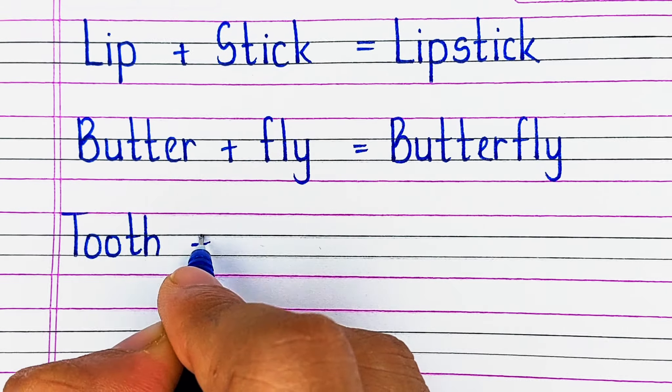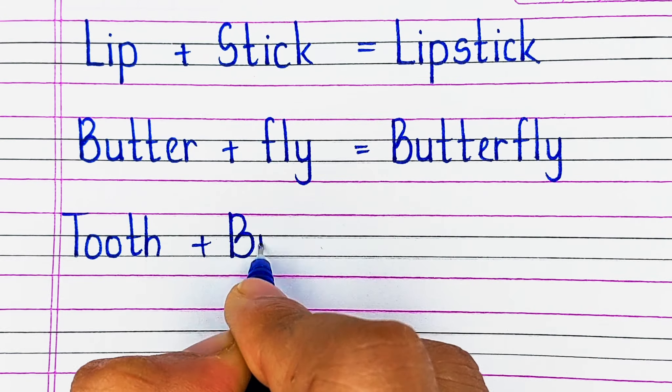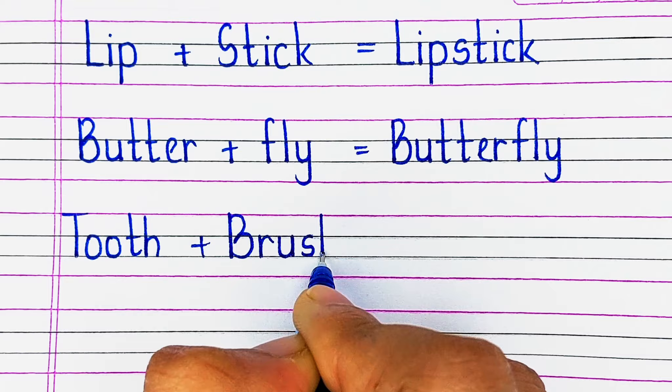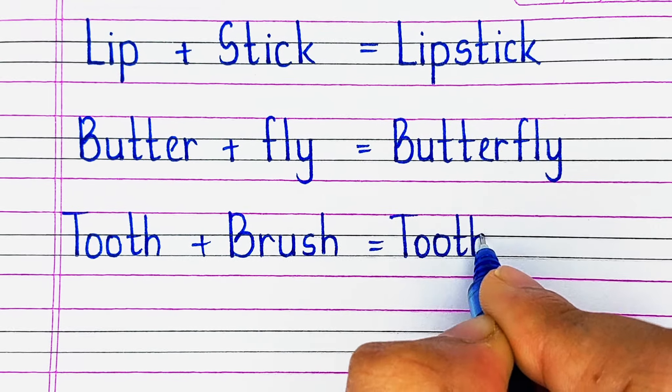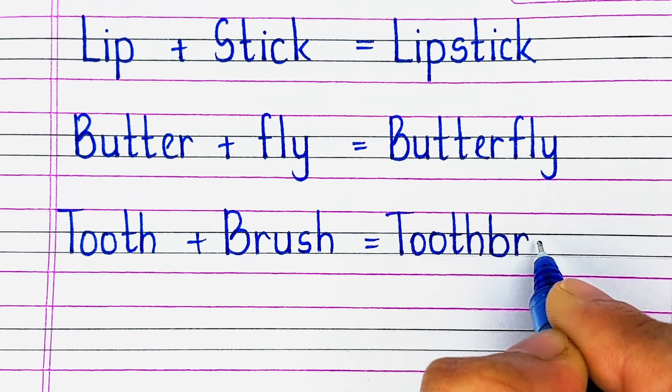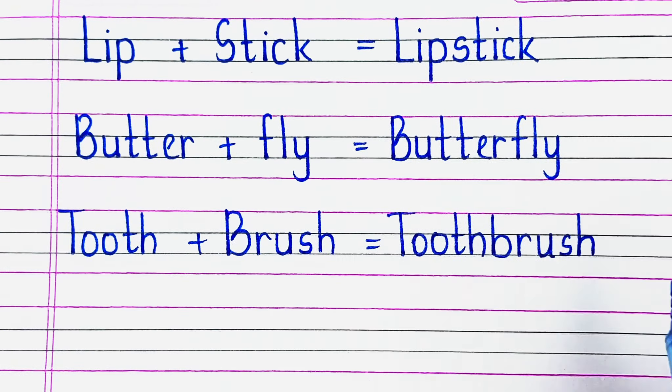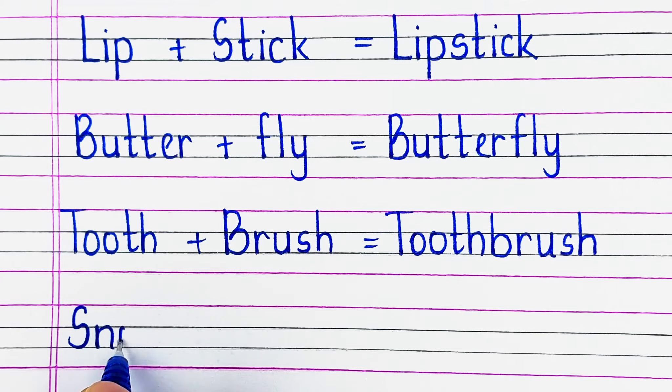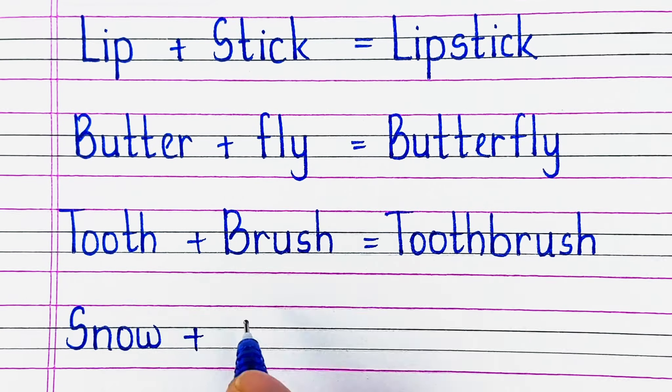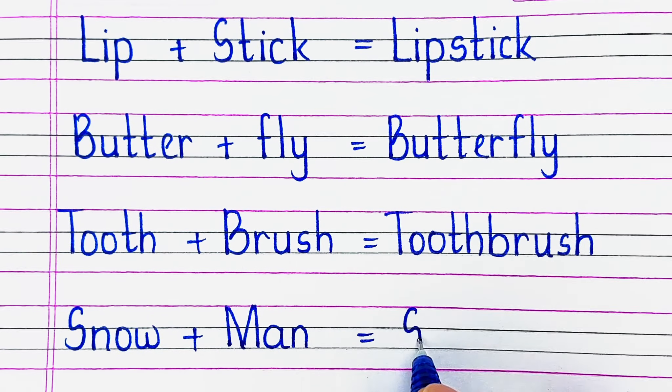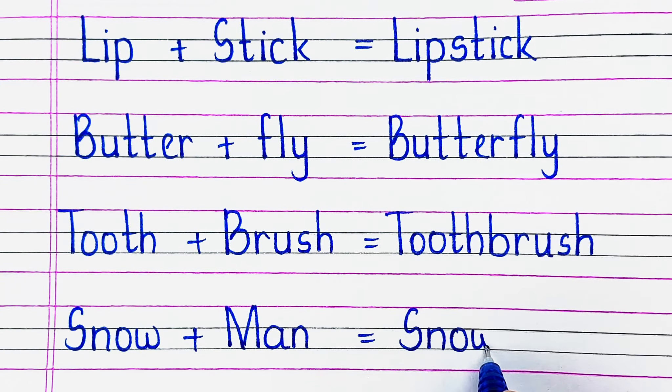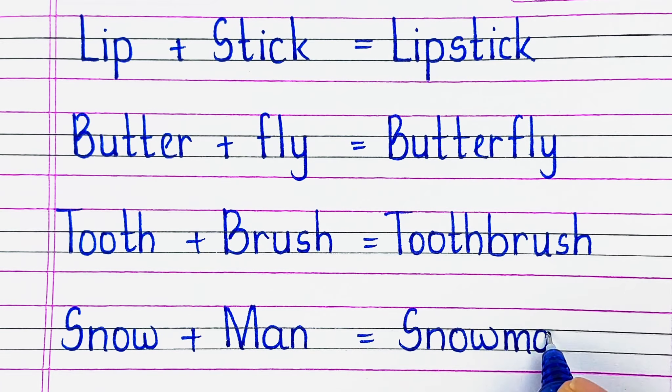Next word in our list is T-O-O-T-H tooth plus B-R-U-S-H brush, toothbrush. Next up we have S-N-O-W snow plus M-A-N man, snowman.